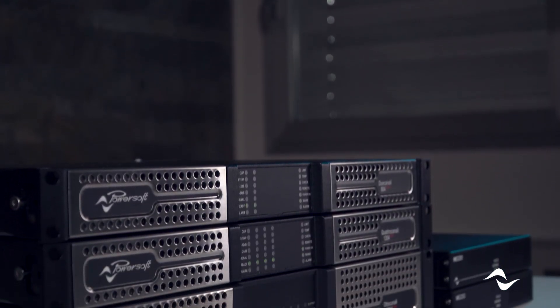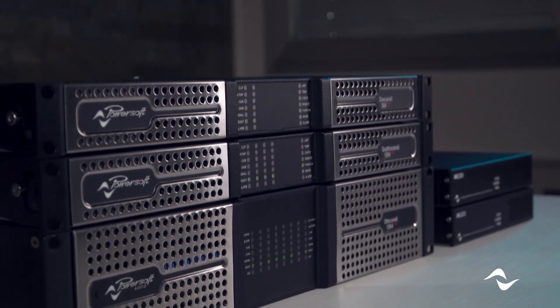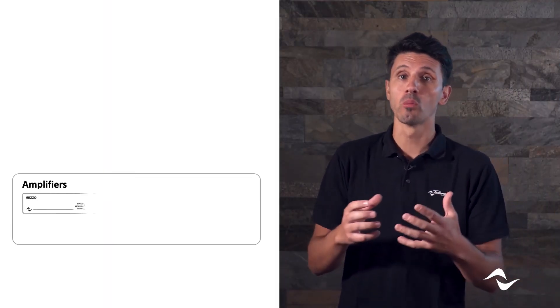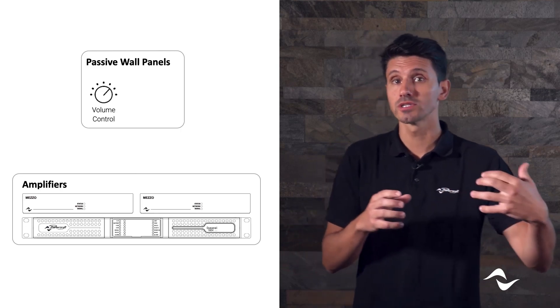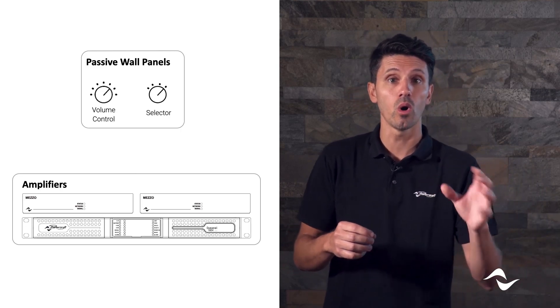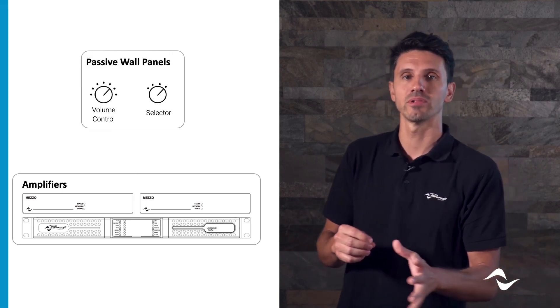This new system approach applies to all our products with onboard DSP: the 8 canali, 4 canali, 2 canali, the mezzo amplifiers and also our T and X series. With these products and the control solutions we will be showing you today, we're offering several different options for full system control. For example, let's start with the simplest and quickest solution for source and zone control. In this solution we have one or more amplifiers, one or more passive controls, and in this configuration we can do level control per zone and select the sources playing in those zones with all control and processing being handled by the amplifiers.